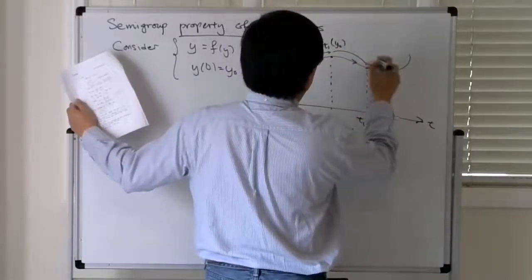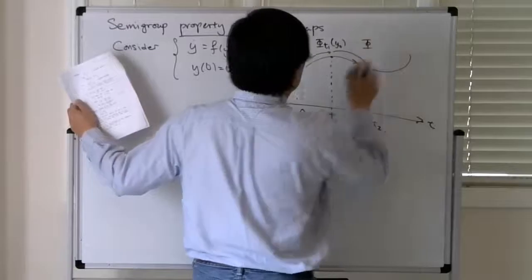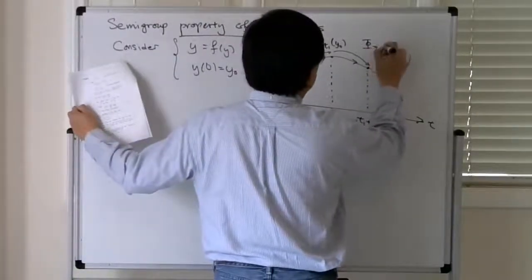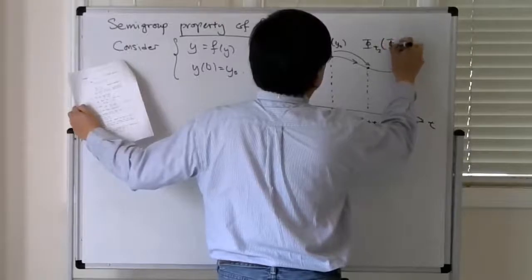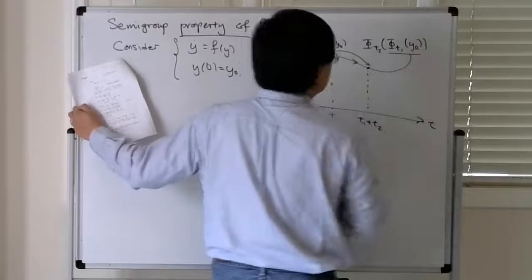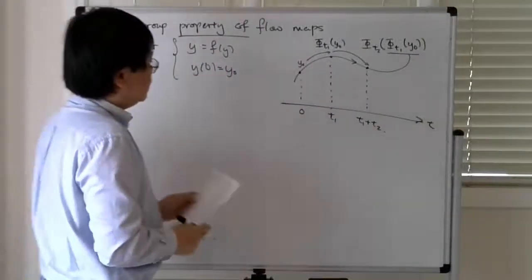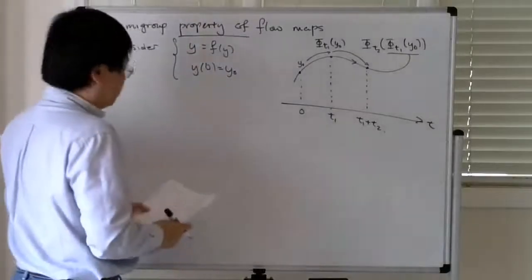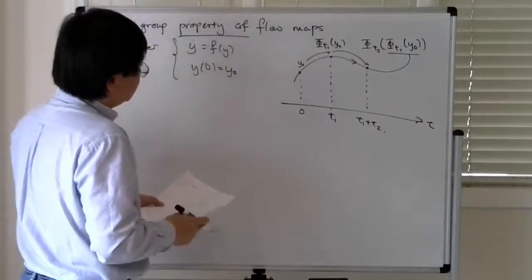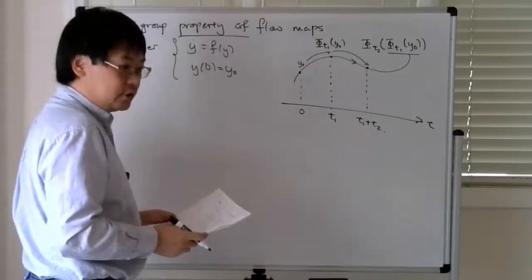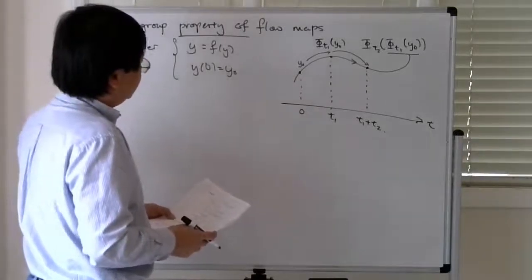And this is, of course, nothing more than the flow map for time t2 applied to the flow map for time t1 of y0. So you should just think of this as the initial data for the time t2 flow map, and basically by the uniqueness theorem for solutions of differential equations...